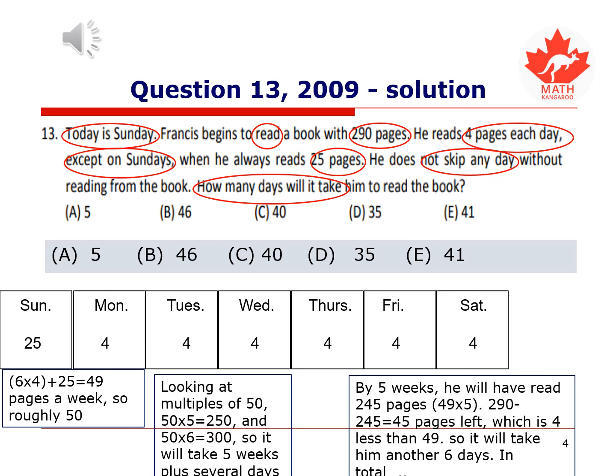So it's going to take 5 weeks and less than a week to read the book. By 5 weeks, he will have read 245 pages. We know that because 49 times 5 is 245. How many pages does he have left? We take the total number of pages, 290, subtract from what he's already read, he has 45 pages left. We notice immediately that 45 is 4 less than 49. So that means he can take off the last Saturday and he'll finish by the Friday of the sixth week. That means it will have taken him a total of 5 weeks and 6 days, which is a total of 41 days.